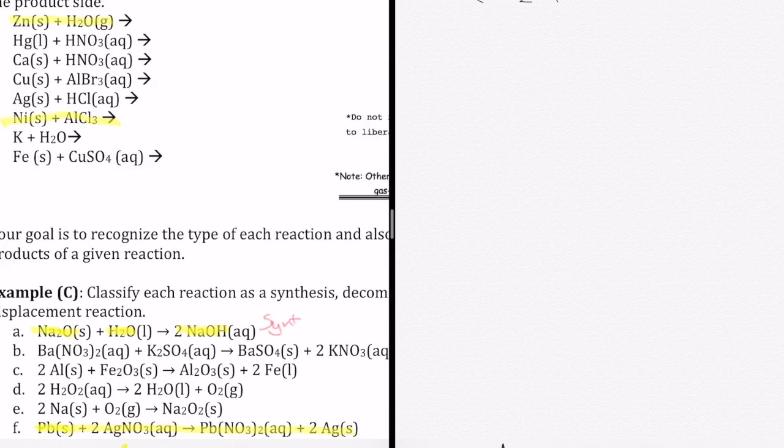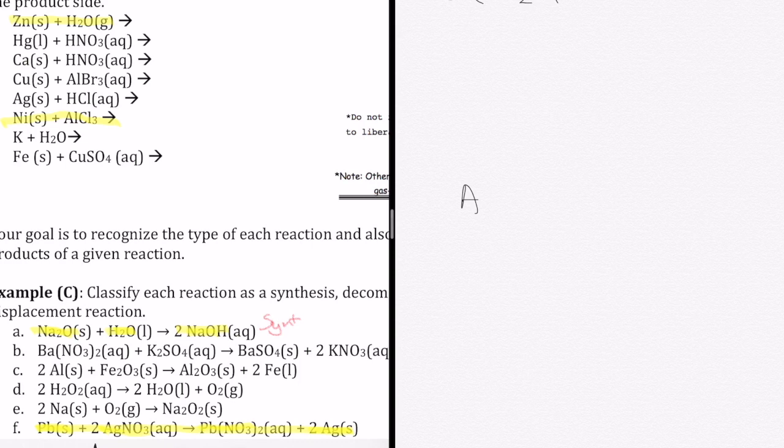And then let me pick another one. I have Pb combining with AgNO3. So that's an element combining with an ionic compound. And the product is an ionic compound with a new element. So that looks like your A plus BC forming AC plus B, which of course is your single displacement pattern. So that's what that one is.